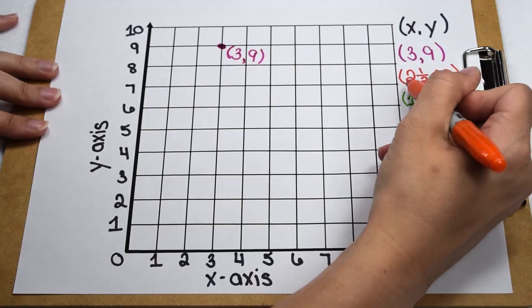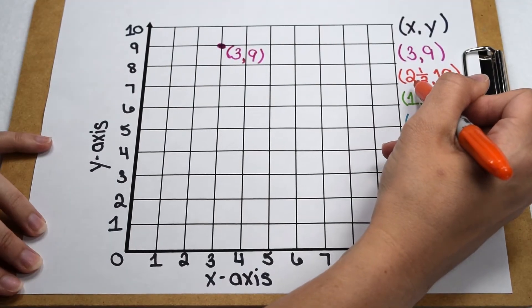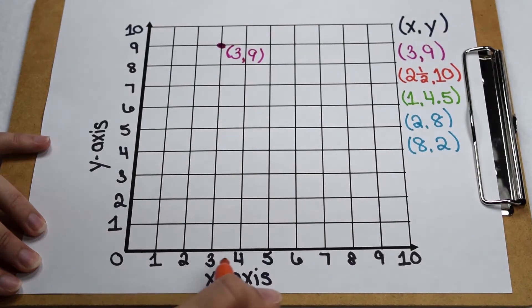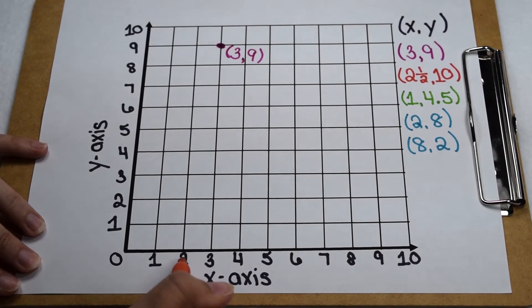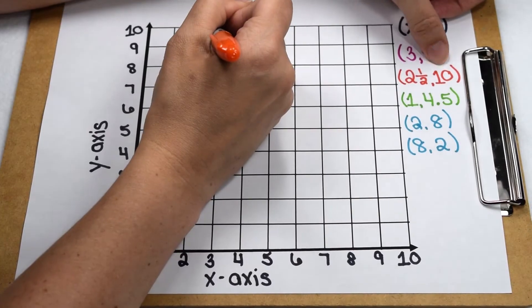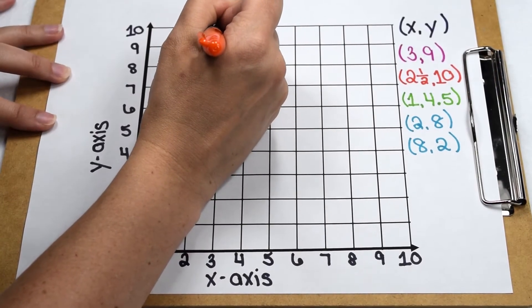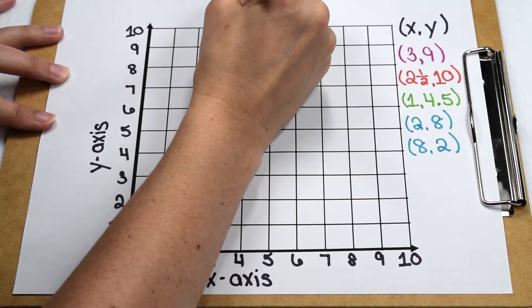If I'm working with fractions, I'm going to follow the same rules. To plot two and a half, I'm going to have to do some estimating. The x-axis scale is all in whole numbers, so two and a half is going to fall midway between two and three. My y value is ten, so I'm going to go up from two and a half, up my y-axis to ten, and plot my point. We can then go ahead and label this point two and a half, ten.